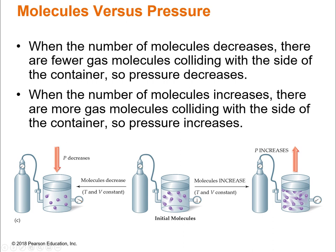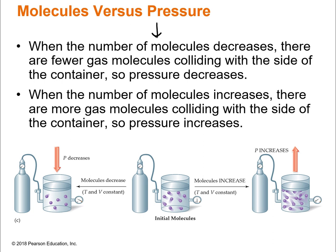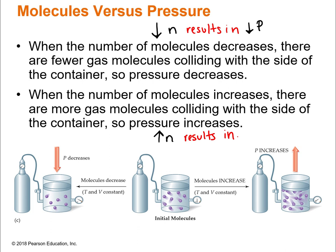The last relationship is between the number of molecules and pressure. When the number of molecules decreases, that results in fewer gas molecules colliding with the walls of the container — so you decrease the pressure as well. But if you add some gas in and increase the number of gas molecules, now you've got more molecules in the same volume, they're going to be colliding with the container much more often, so you increase the pressure when you increase the number of molecules.